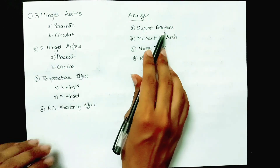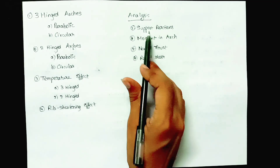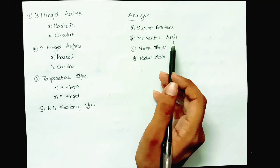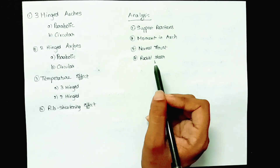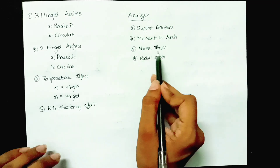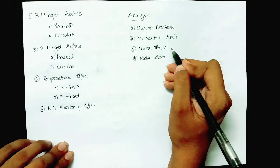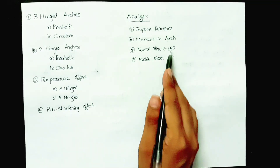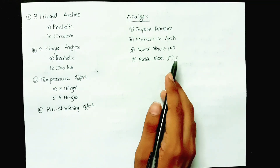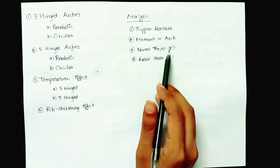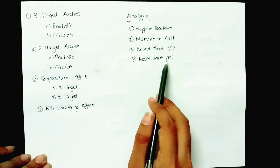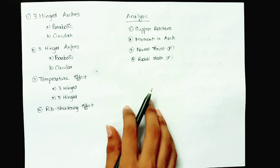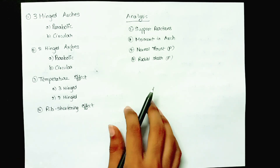For support reactions, there will be one vertical reaction and one horizontal reaction. The moment in the arch is calculated using formulas I will explain in upcoming videos. Normal thrust is denoted as P and radial shear as F — in some textbooks notations may differ but the procedure and formulas are almost similar. We calculate normal thrust and radial shear at various points in the arch.